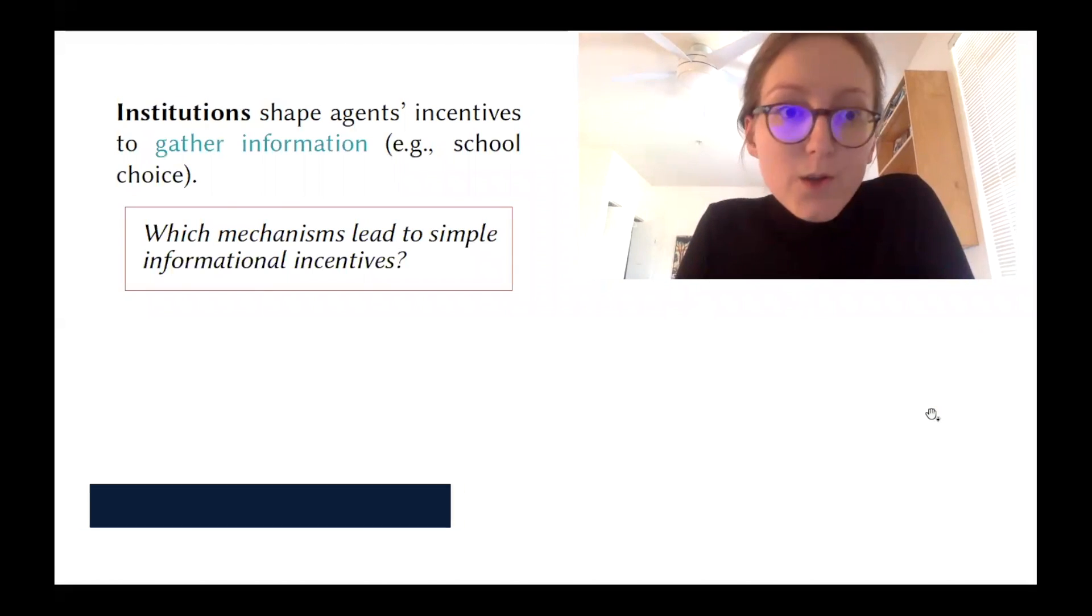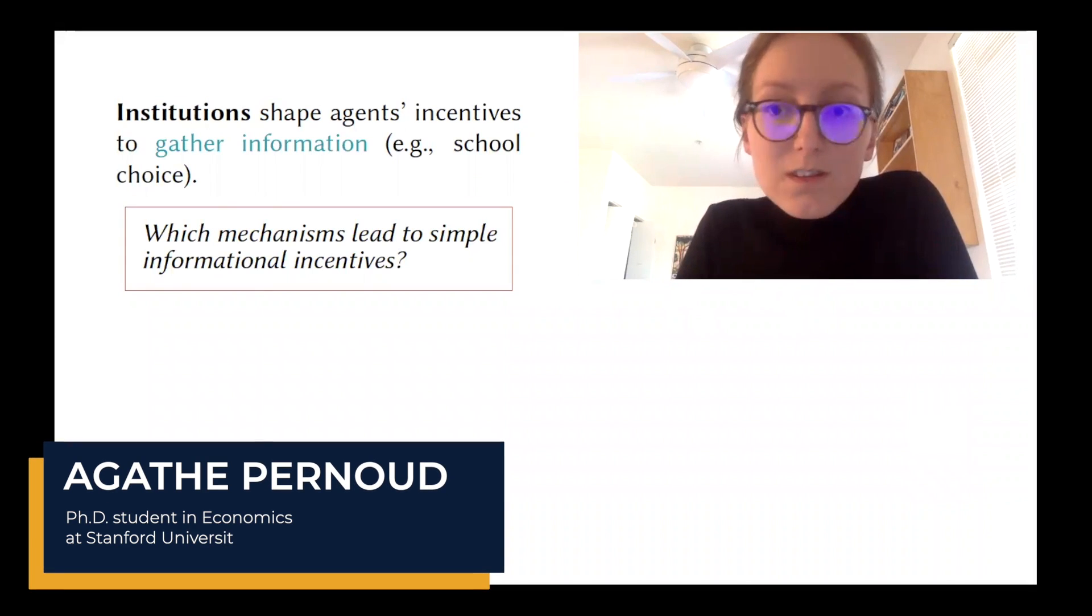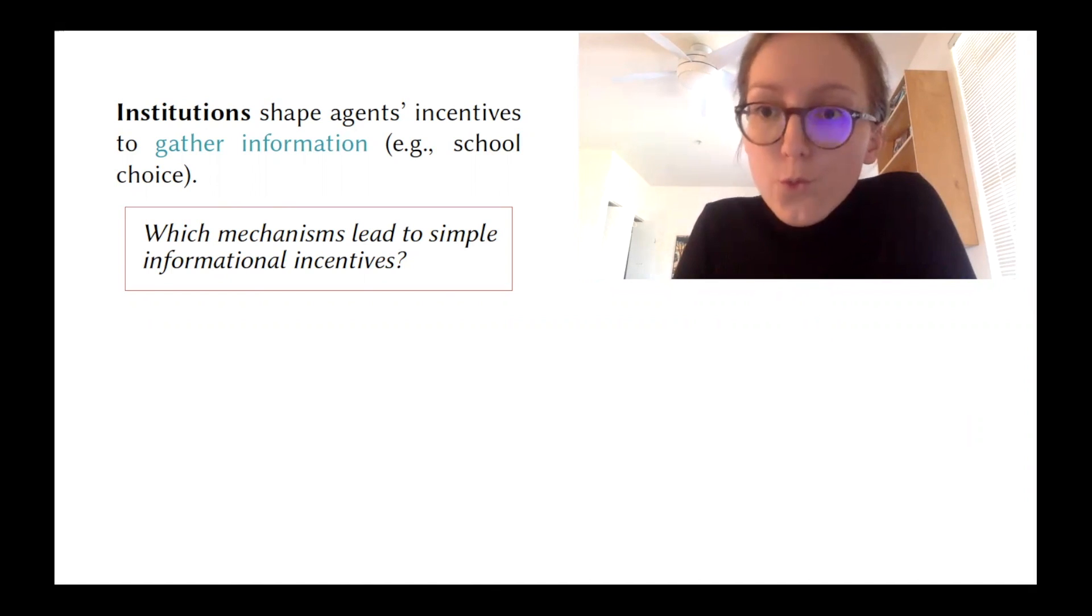In this paper we argue that institutions shape agents' incentives to gather information. For instance, the specific rule used to assign students to school is very likely to impact how much agents want to learn about the different schools available to them.